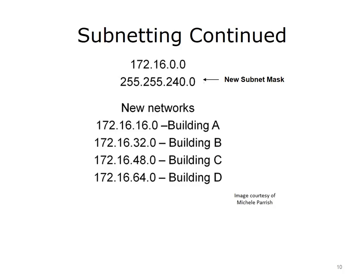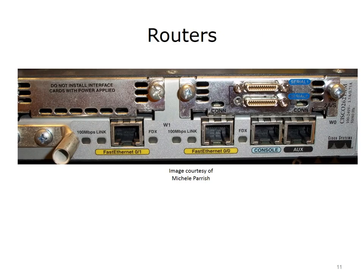172.16.0.0 is a Class B address. The default subnet mask is 255.255.0.0. The first two octets identify the network, and the last two octets identify the hosts. There are 16 bits that can be used to identify hosts on the 172.16.0.0 network, meaning we can have over 65,000 hosts on that one network. We can take that one network and subdivide it, or subnet it, into more networks by taking some host bits and changing them to network bits. With a new subnet mask of 255.255.240.0 applied to 172.16.0.0, we can create 16 networks with 4,000 hosts on each network.